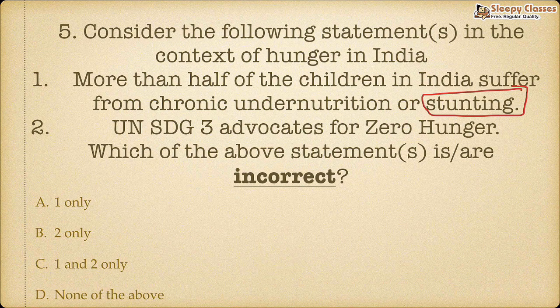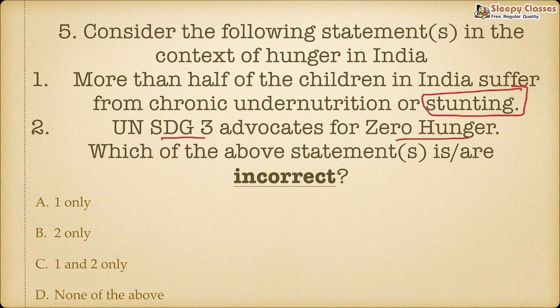Second statement: UN SDG 3 advocates for zero hunger. You need to identify which of these statements is incorrect. To remember the SDGs, we have a famous video — you should know the important SDGs because you can sprinkle such facts in answers to make them better.